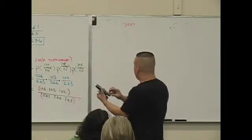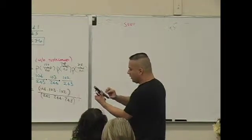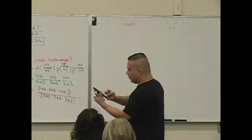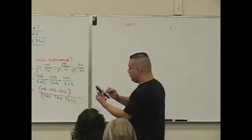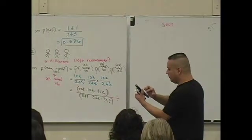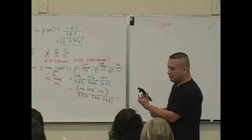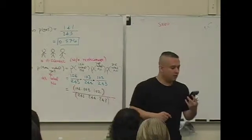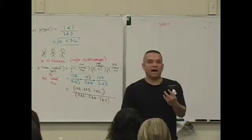If you said, put parentheses, 104 times 103 times 102, divided by 245 times 244 times 243. You can even check what you're doing, and what do you get as an answer? Let's round this to the nearest thousandth.